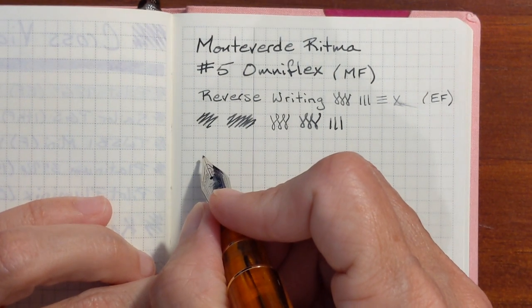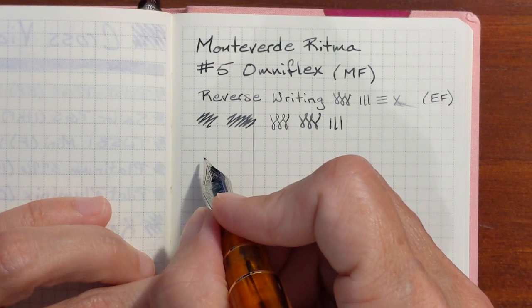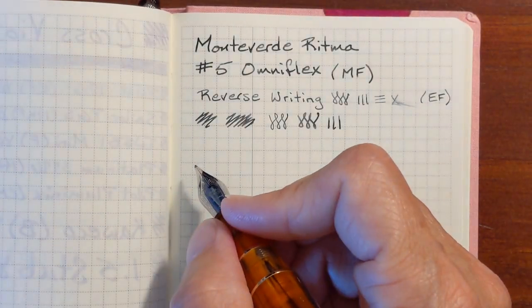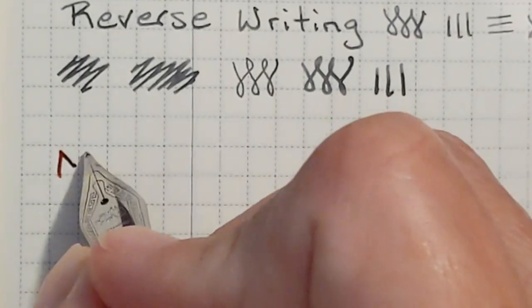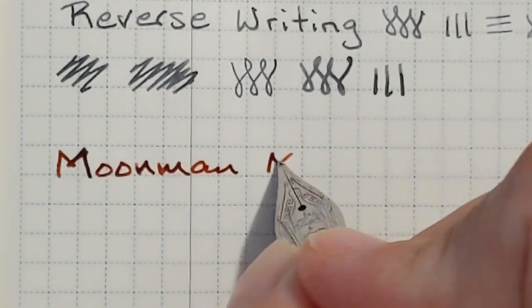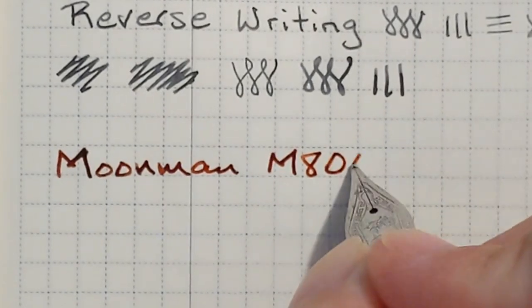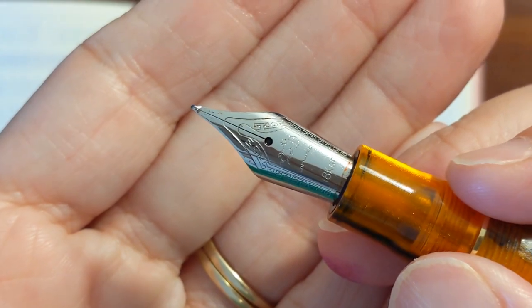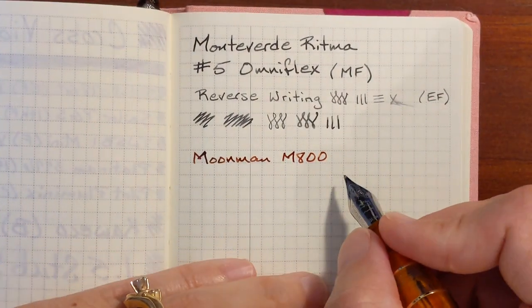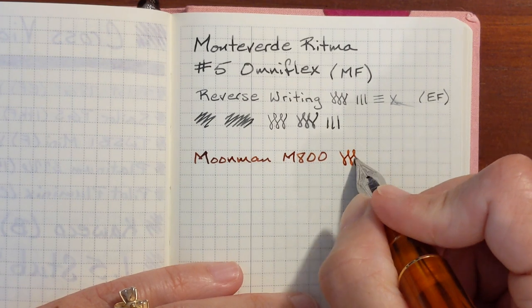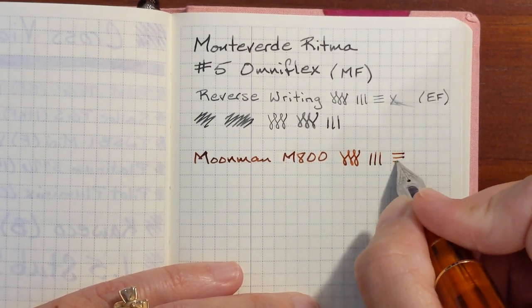I've got it inked up with Taccia Hokusai Benitsuchi. And I'm not sure, does this nib even say what size it is? No, just a Jinhao nib. I'm not sure what size it is, but that Hokusai Benitsuchi just looks really good. You get some nice shading.